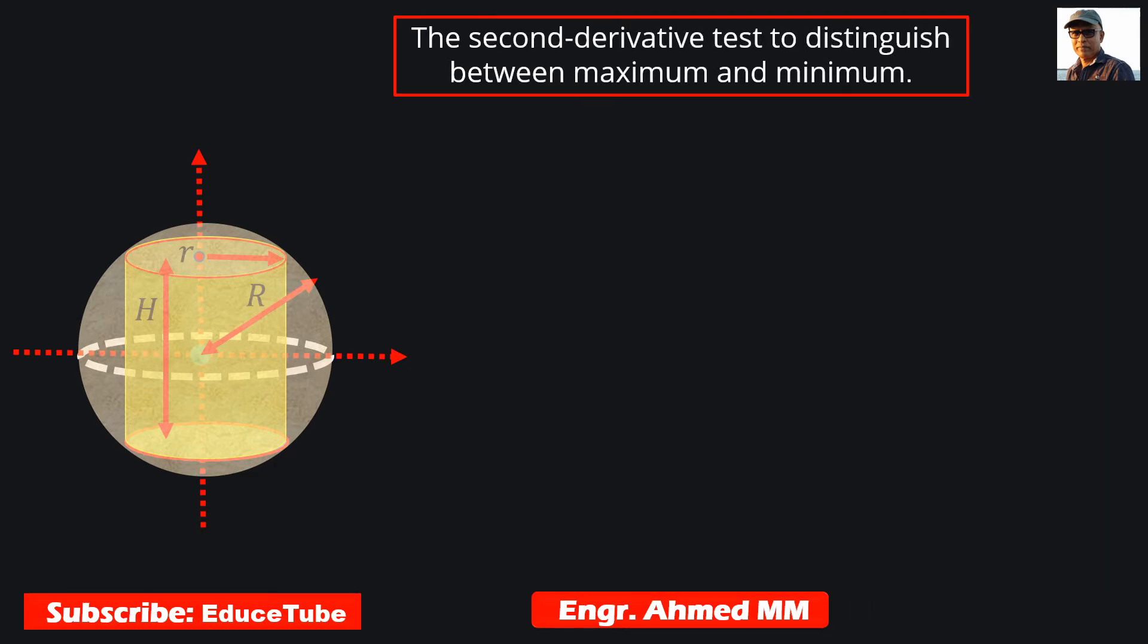The second derivative test distinguishes between maximum and minimum to be sure whether it is maximum or not. Our condition is we've already taken the first derivative equal to zero, and now we will do the second derivative to see if the value comes negative to be sure that the volume will be maximum.